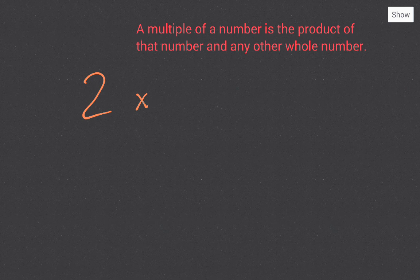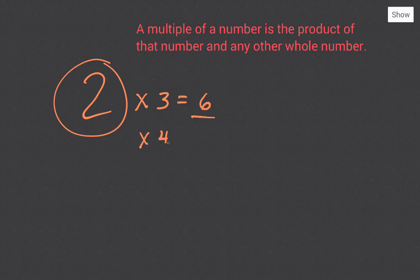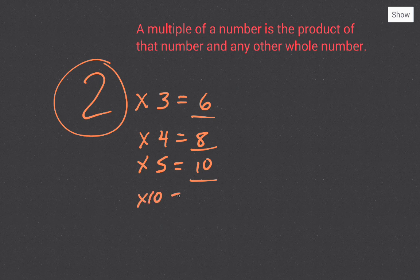So what are multiples and how do we find them? A multiple of a number is the product of that number and any other whole number. So if I were to ask you what are some multiples of two, all you would need to do is multiply two times any other whole number. Two times three gives us six, two times four gives us eight, two times five gives us ten, and two times ten gives us twenty.